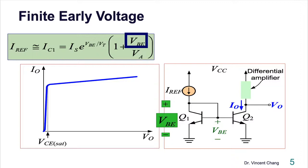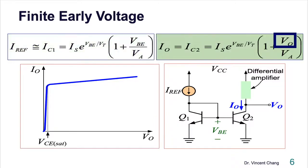VCE divided by VA, this is IC1. We can do the same thing for IC2, which is IO. What changed on the previous slide is this: because VCE1 equals VBE, we replace, for Q1, we replace VCE1 with VBE. We can do the similar things for Q2. Now we replace VCE2 with VO.